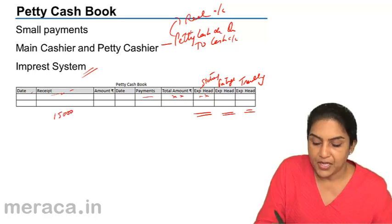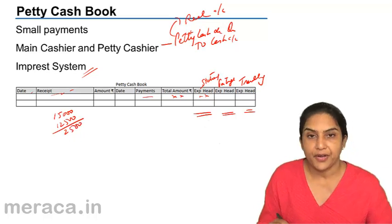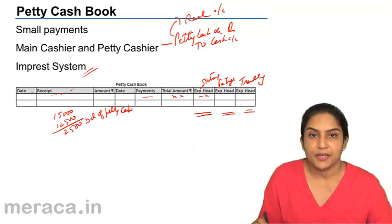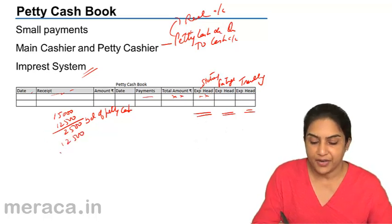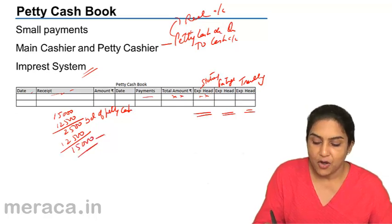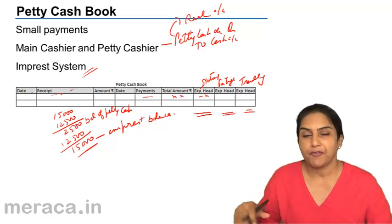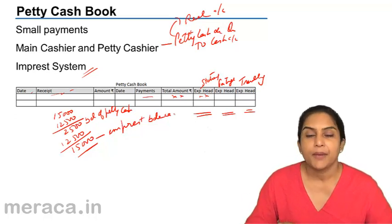Out of 15,000, the total amount of 12,500 has been spent by him, so he now has a balance of 2,500 — balance of petty cash. At the end of a fortnight, the main cashier will reimburse this amount of 12,500 so that the imprest balance of 15,000 is again maintained. So either at the end of this period or if the cash gets over before — whichever is earlier — the main cashier will reimburse the petty cashier. This is how the imprest system works.